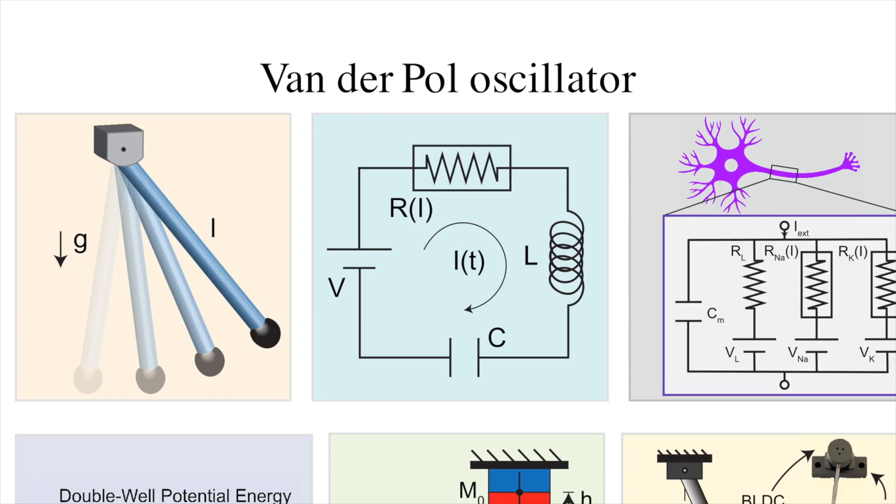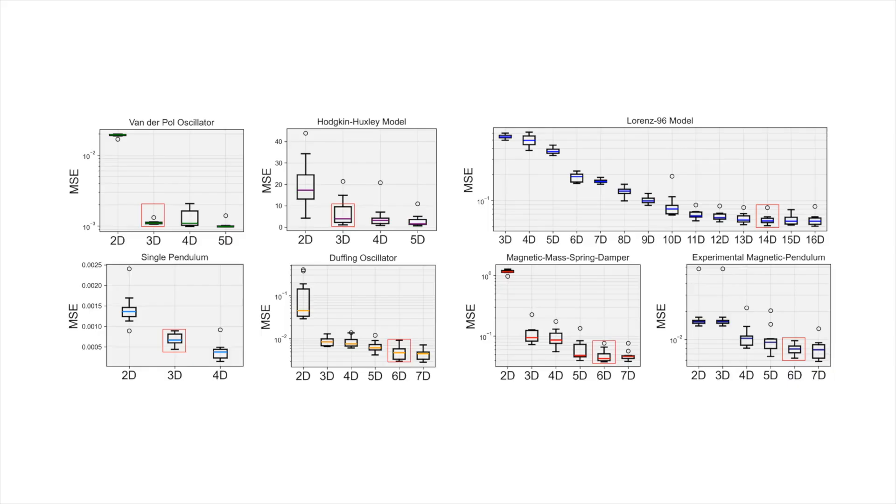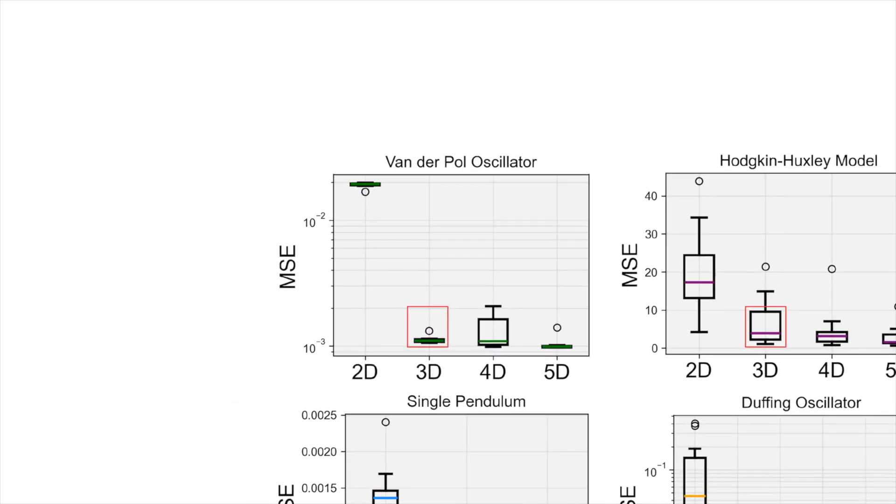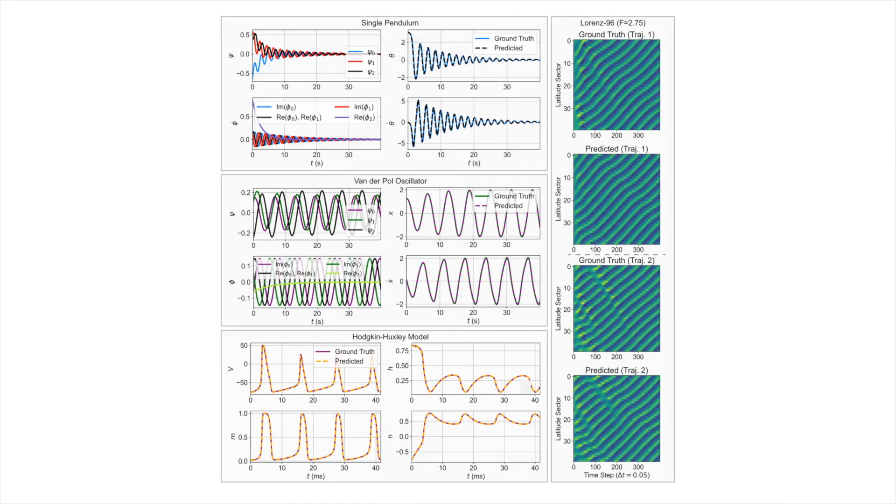Our approach also applies to systems with other types of attractors. Let's take a look at the results from the 2D Vanderpol oscillator, a model that exhibits self-sustained or limit cycle oscillations that continue forever. In previous work, the Vanderpol system has been modeled in dimensions that are typically an order of magnitude higher than the original state dimension. Our method produces a low-dimensional 3D model that makes accurate predictions for extended horizons.